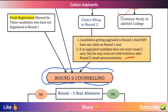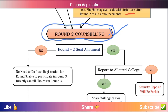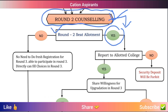In Round 2 counseling, if you are a fresh candidate you can do a fresh registration. If you have already registered in Round 1, you will have a direct choice filling. You proceed with choice filling, choice locking, and then receive the Round 2 counseling seat allotment results.